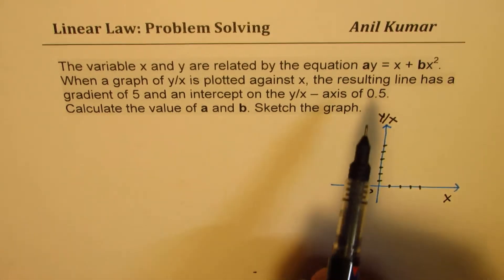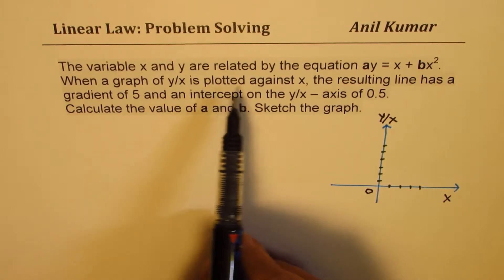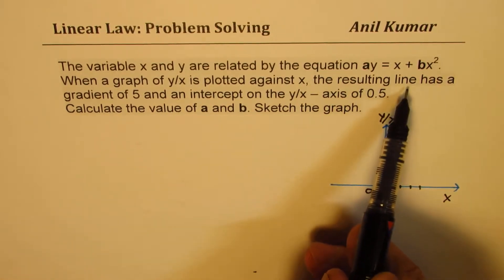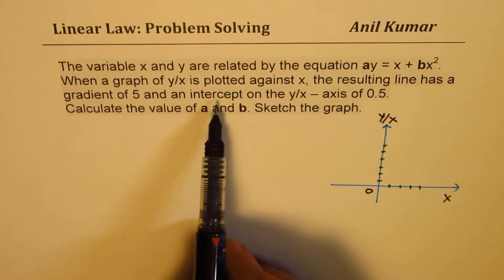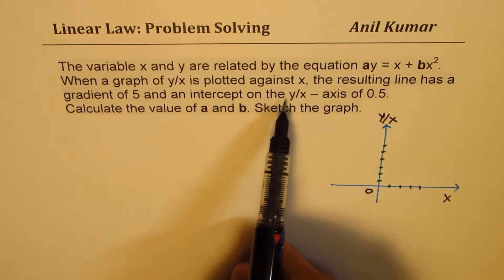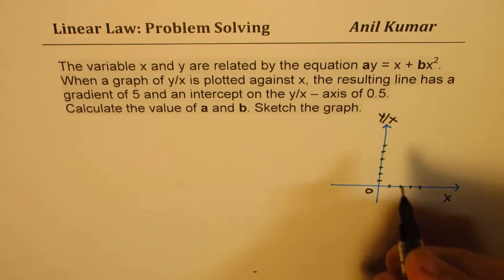When the graph of y/x is plotted against x, the resulting line has a gradient of 5 and an intercept on the y/x axis of 0.5.